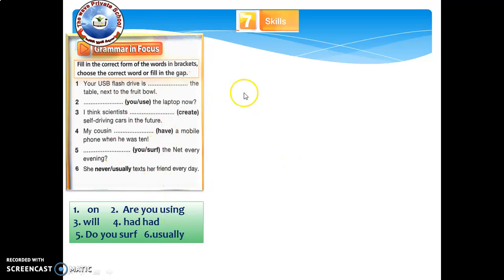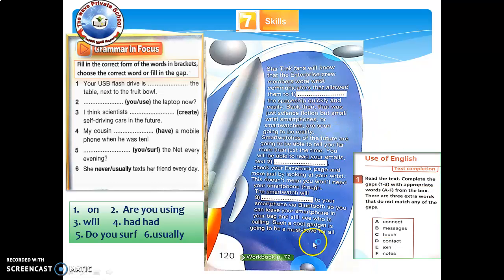And then here on seven, now let's try to read this one and choose the answers. There are three words that are not matching any of the gaps. So, Star Trek fans will know that the Enterprise crew members had wrist communicators that allowed them to contact, letter D, the spaceship quickly and easily. Back then, that was just science fiction, but small wrist smartphones or smartwatches are soon going to be reality. They are actually for real now; maybe some of you have this gadget. Smartwatches of the future are going to be able to tell you far more than just the time.